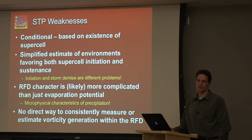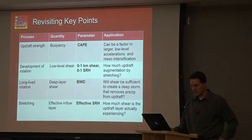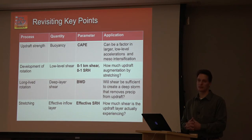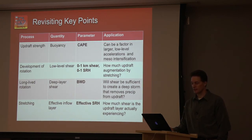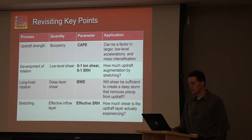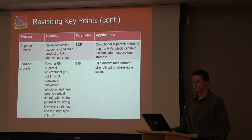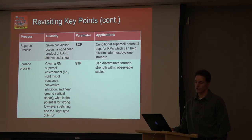The key points: we need buoyancy, vertical shear, strong low-level stretching, and a storm-scale source for vorticity. As of now, this is about the best we've been able to do statistically, and it works pretty well. From operational experience, using this set of ingredients can give you a fairly high probability of detection while keeping the false alarm rate in check. You can do a credible job forecasting significant tornadoes with supercells if you follow this recipe — just consider the limiting factors, and you'll be properly addressing one of the most important forecast problems you'll face in the National Weather Service.